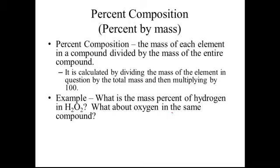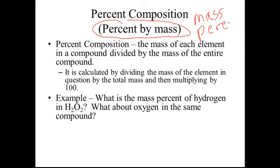First of all, percent composition — sometimes we refer to it as percent composition, sometimes you'll see it called percent by mass, and you might also see it written as mass percent. All three of those mean the same thing. It is the mass of each element in a compound divided by the entire mass of the compound, multiplied by 100.